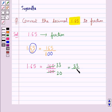This is equal to 33 upon 20. So, we get the decimal number 1.65 is written as the fraction 33 upon 20.